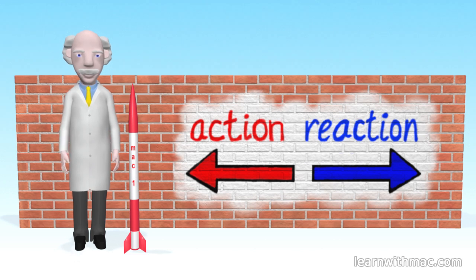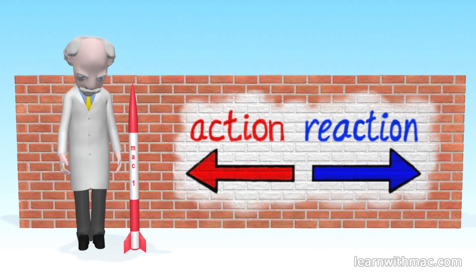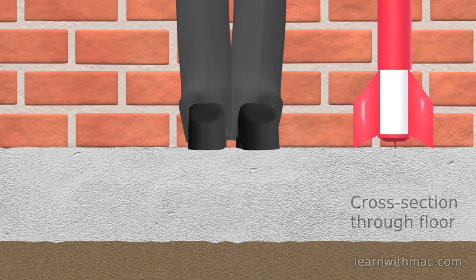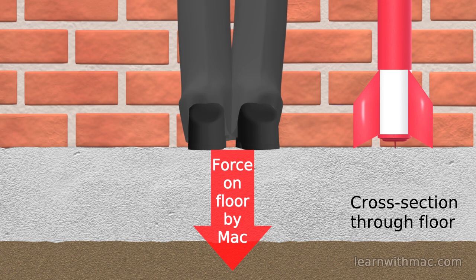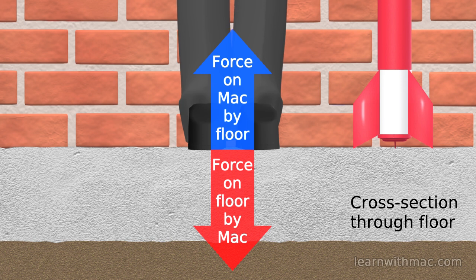First of all, the ability for us to stand on a floor without falling through it. While I'm standing here, I'm applying a force to the floor as a result of my weight. Newton's third law says that as a result of this interaction, the floor will apply an equal force on me in the opposite direction.